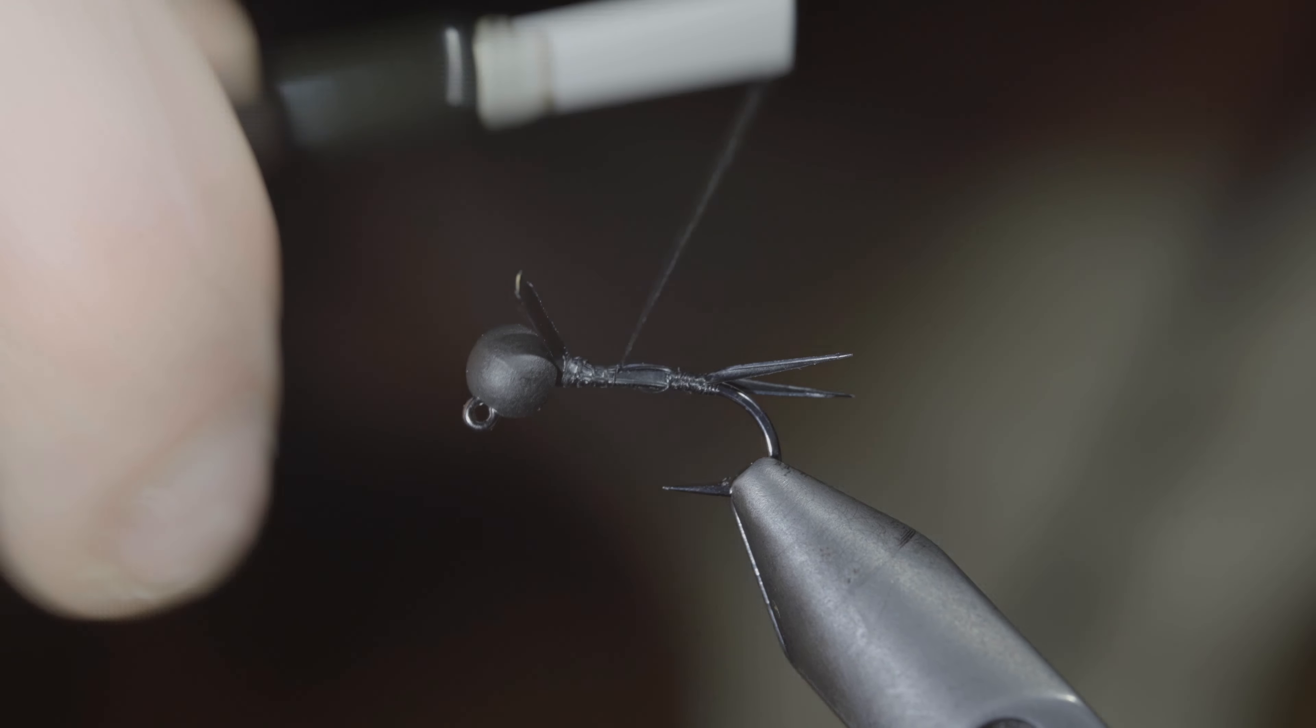Secure them tightly in place, wrapping forward, folding over our biots to use them to help build up some bulk. Secure them tightly in place and snip the excess free.